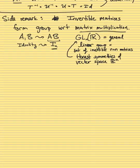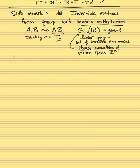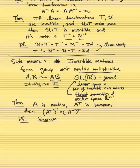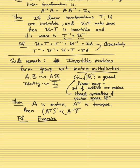Let me also state a lemma I won't prove. If A is a matrix and A^T is the transpose, then you'd like to know what the inverse of the transpose is. It turns out it has an obvious formula: A transpose inverse is just the inverse transpose. I'll leave this as an exercise — it's very similar to the last proposition about composition of linear transformations.